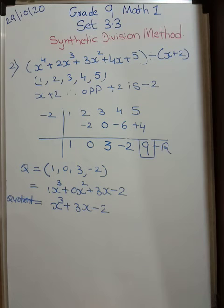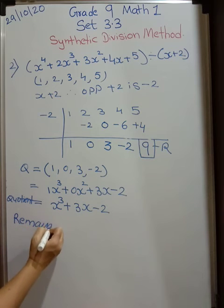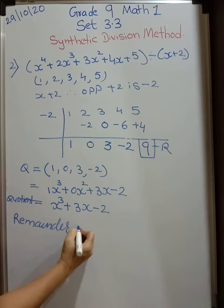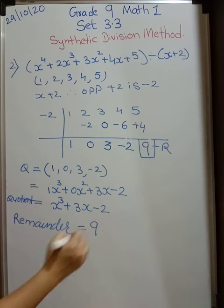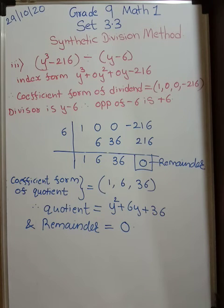So this is your quotient. x cube plus 3x minus 2 and remainder is what? 9. So write here remainder is equal to 9. Got it? I think it's very easy. Let's do one more.